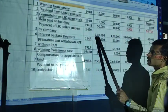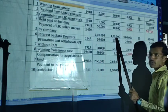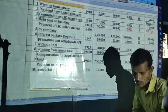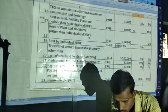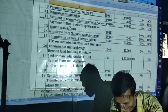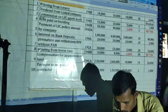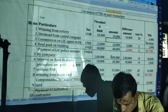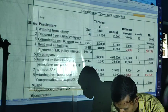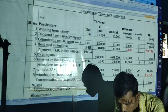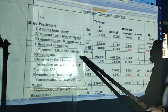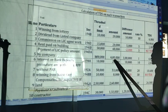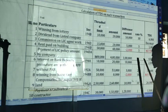Payment of LIC policy amount by a company: 1 lakh is the threshold limit, but here the amount is 4 lakh. LIC amount — wait. LIC amount is 1 percentage. Payment of LIC policy amount by a company: up to 1 lakh — no TDS. Here the amount is 4 lakh, hence it will attract 1% TDS.